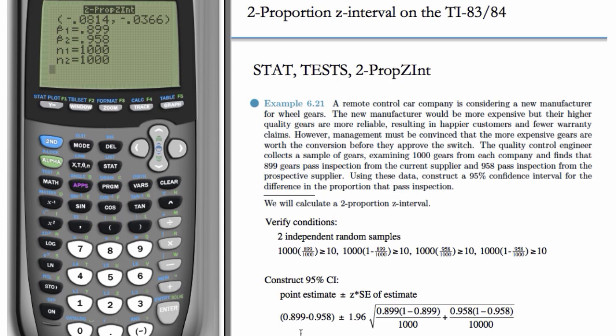So we have to recall the order that we did the difference in. So we did current minus prospective. And because the whole interval is negative, the prospective one is bigger, we have evidence that the prospective supplier has a higher proportion that passed the inspection because the whole interval is negative, is below 0.